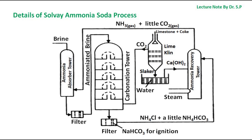To counter this effect, the lower part of the Solvay Tower is cooled. The precipitate of sodium hydrogen carbonate is separated by vacuum filtration and washed to remove ammonium salts. Dry sodium bicarbonate is then heated in a rotary furnace called a calciner to give anhydrous sodium carbonate or soda ash.